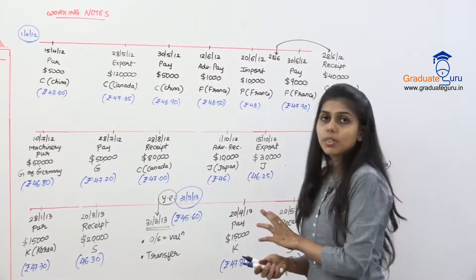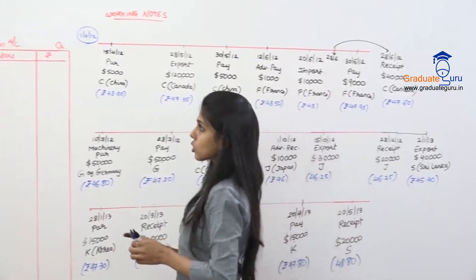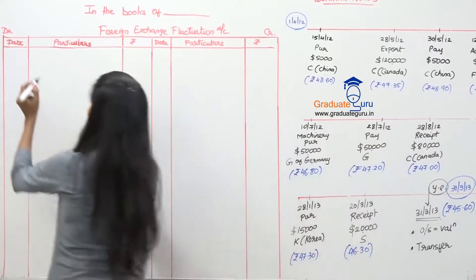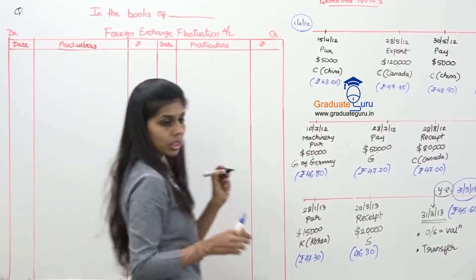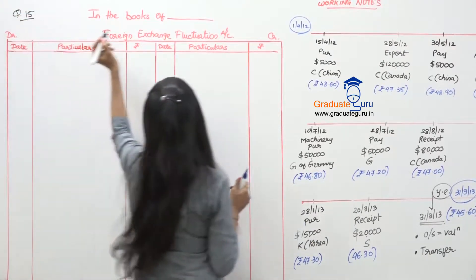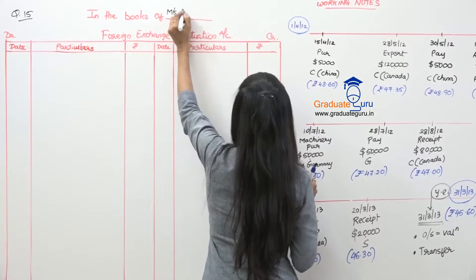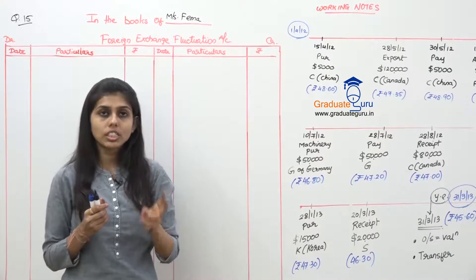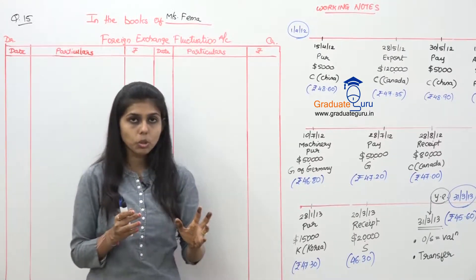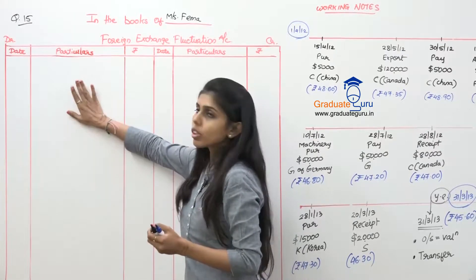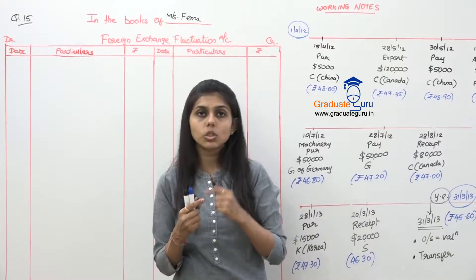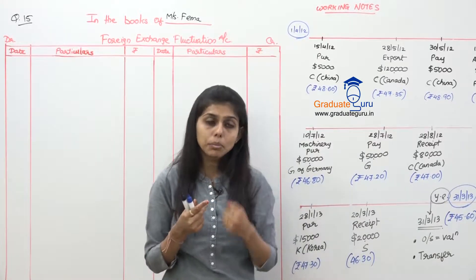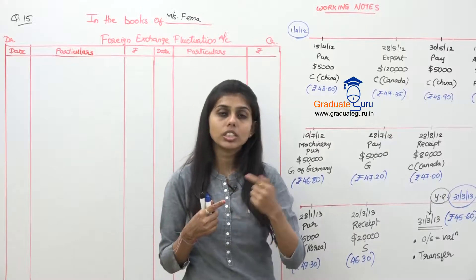Now we will prepare the foreign exchange fluctuation account. The format has date, particulars, and rupees on both sides. This is question number 15 in the books of Messrs FEMA. We only need to prepare the FEF account, and exchange differences will be posted accordingly.